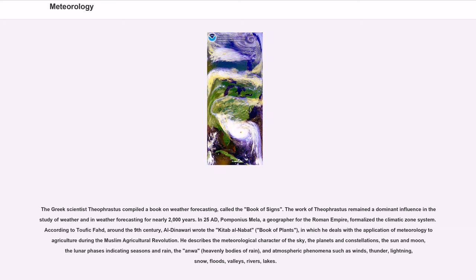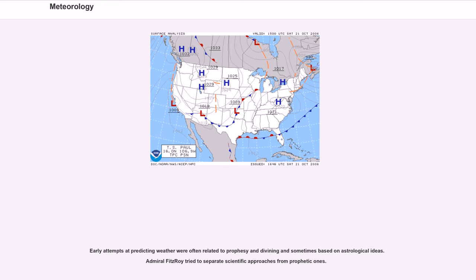In 25 AD, Pomponius Mela, a geographer for the Roman Empire, formalized the climatic zone system. Around the 9th century, al-Dinawari wrote the Kitab al-Nabat, Book of Plants, in which he deals with the application of meteorology to agriculture during the Muslim Agricultural Revolution. He describes the meteorological character of the sky, the planets and constellations, the sun and moon, the lunar phases indicating seasons and rain, and atmospheric phenomena such as winds, thunder, lightning, snow, floods, valleys, rivers, and lakes.